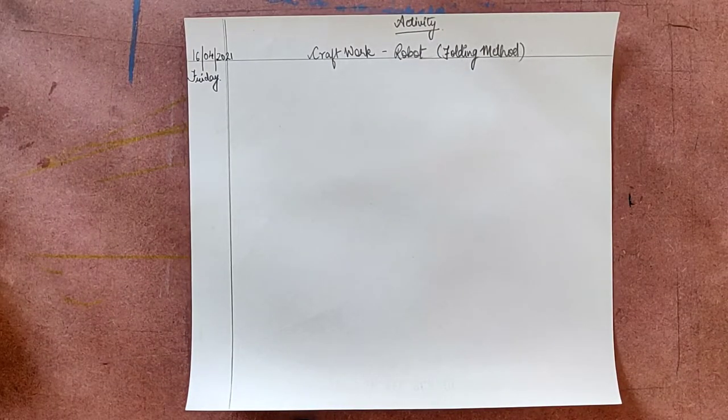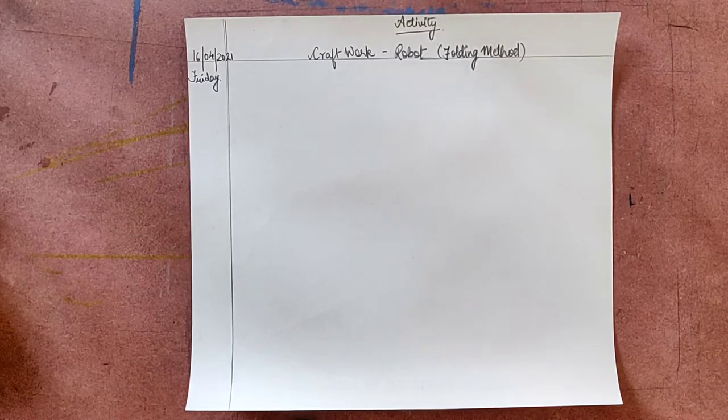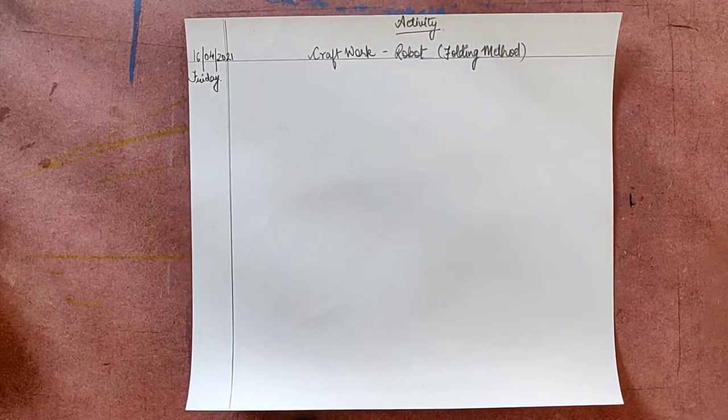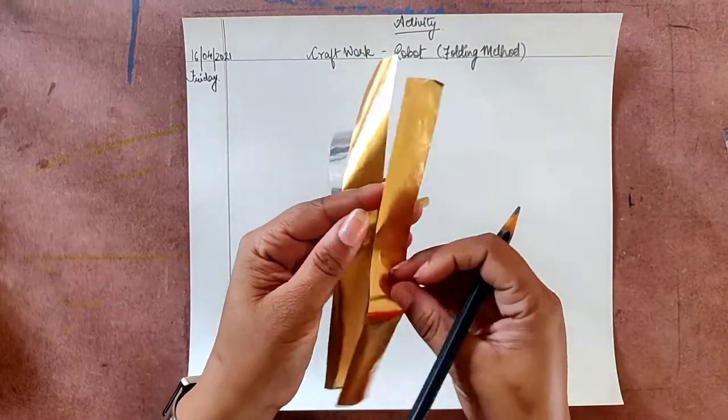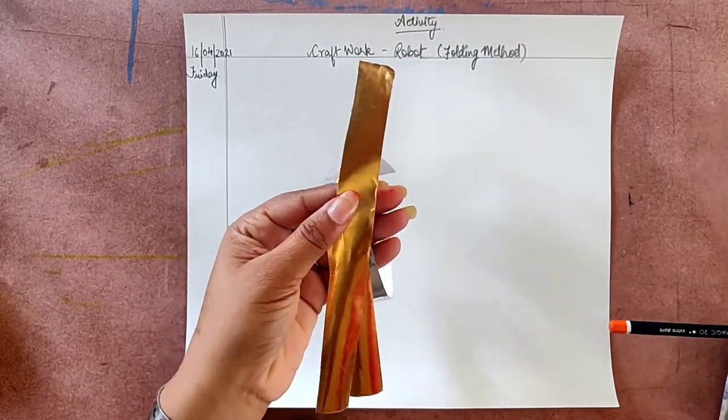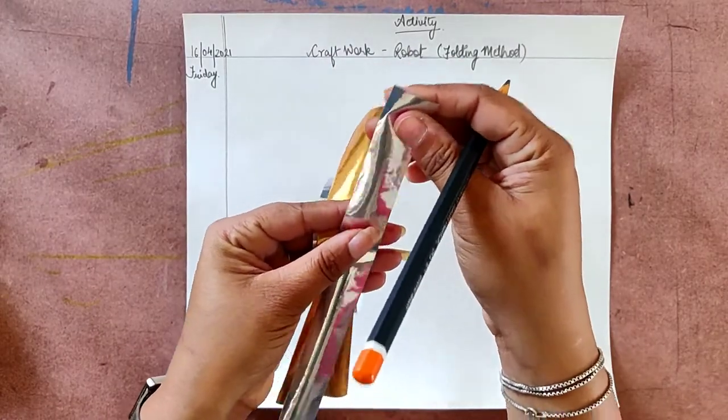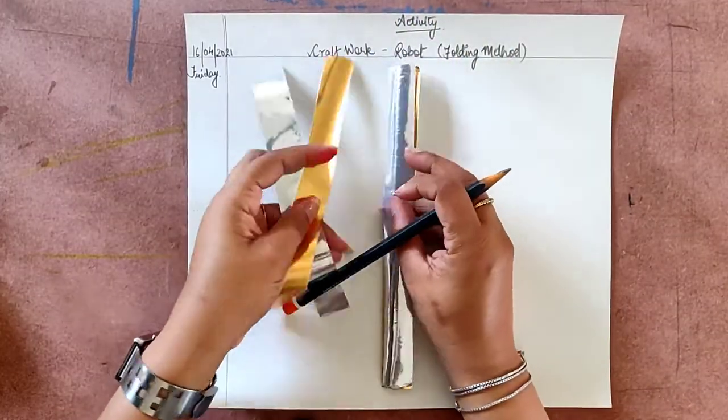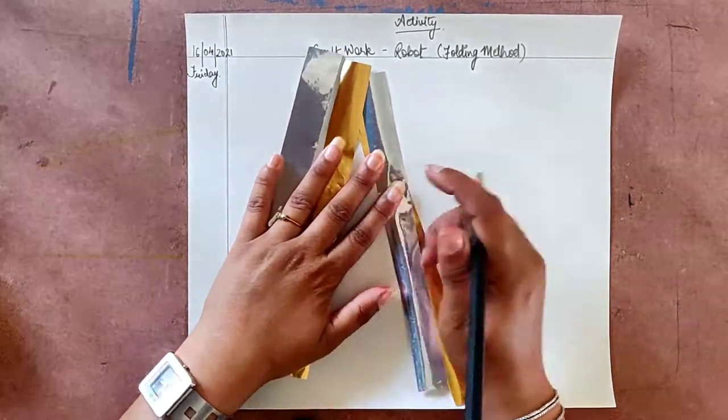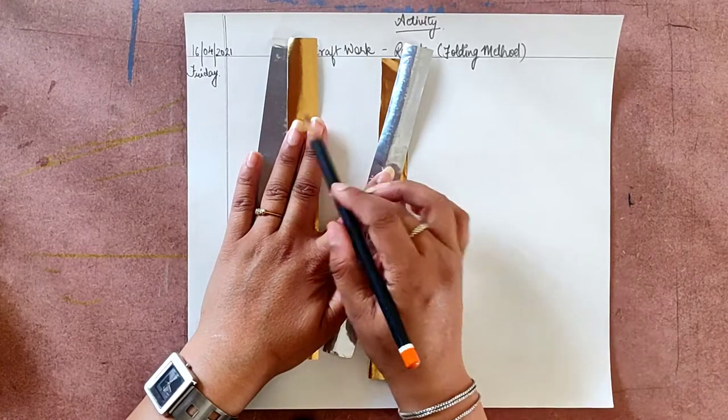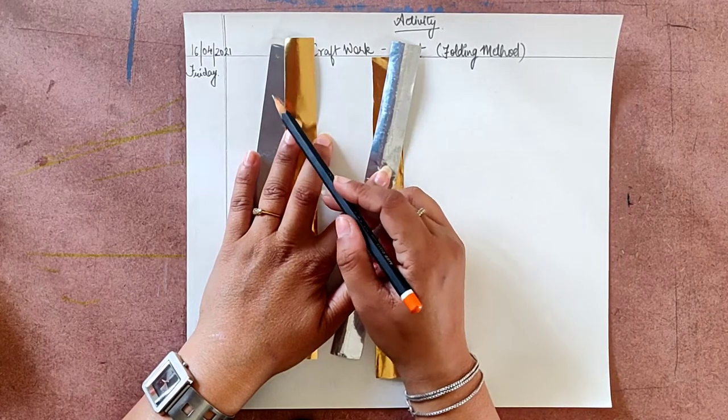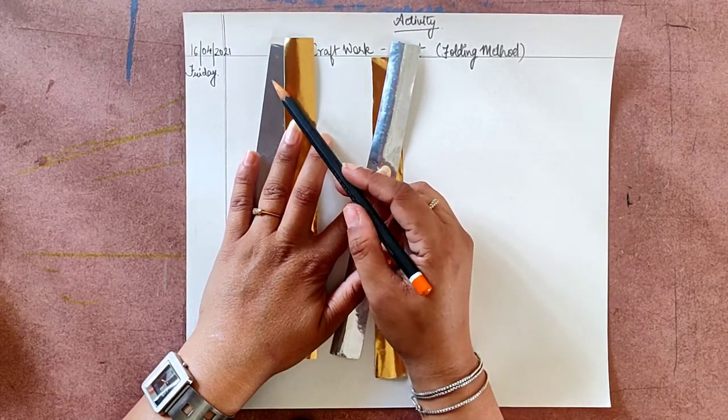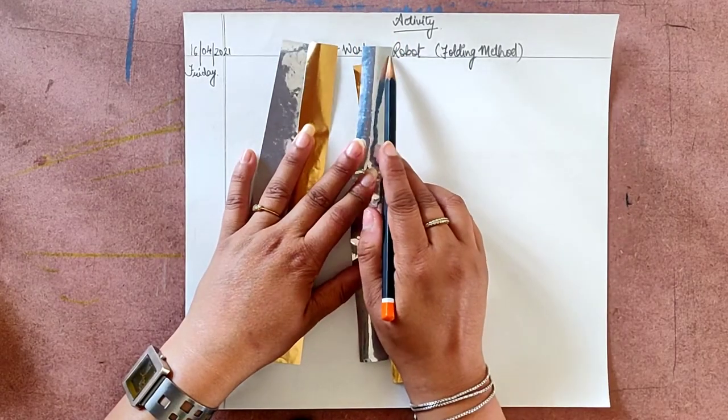Now, first for robot folding method, as I have written, the materials required on the board, you will need these. I am taking 2 different colors and the size of these, these are 2 same sheets. Size of this is 2 by 20 by 2 cm, 20 by 2 cm.